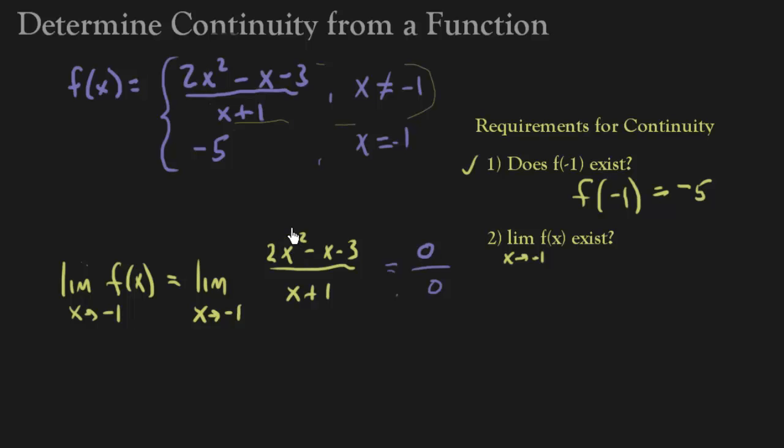If you plug in negative 1 you're going to get 0 on the top, because negative 1 squared is a positive 1, so you get 2 times 1 which is 2. And then you're going to get minus negative 1 which is a positive 1. So you have a 2, a plus 1 which is 3, and then you minus 3. So you get 0 over 0.